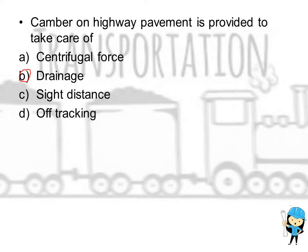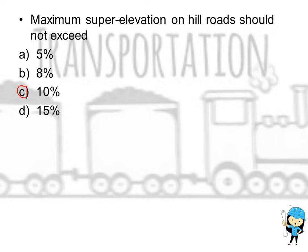One: Camber on highway pavement is provided to take care of drainage. Two: Maximum super elevation on hill road should not exceed 10%.